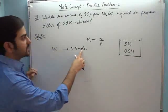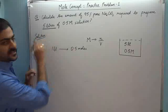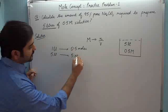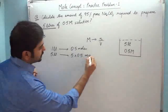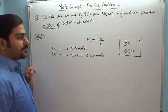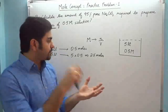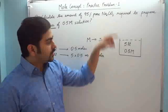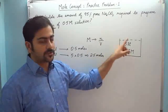So if 1 liter is 0.5 moles, then the question is 5 liters. So 5 liters is 5 into 0.5, that is 2.5 moles. So if I put in 2.5 moles of Na₂CO₃, then 5 liters is 0.5 molar solution.